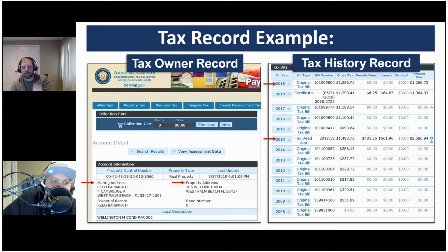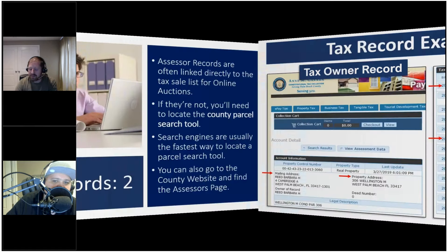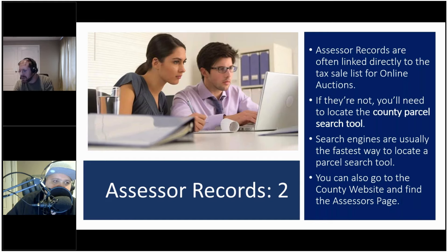Whether we're looking at liens or deeds, it's important to know the tax payment history of the property because there's generally going to be money outstanding or owed on it. The assessment records in most cases are now linked directly to the online auctions or lists, making it relatively easy — you can just click a link to pull up all the information about the property. We still use parcel search tools all the time, and the fastest way to find the assessor's parcel search tool is usually a basic search engine — type in the county name and assessor and it comes right up.